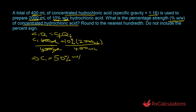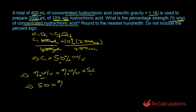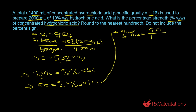This 50% is weight by volume, but the question asks for percentage weight by weight. We convert using the equation: percent weight by volume equals percent weight by weight times specific gravity. Substituting: 50 equals percent weight by weight times 1.16. Solving for percent weight by weight: 50 divided by 1.16 equals 43.10. The question says round to the nearest hundredth and do not include units, so the answer is 43.10.